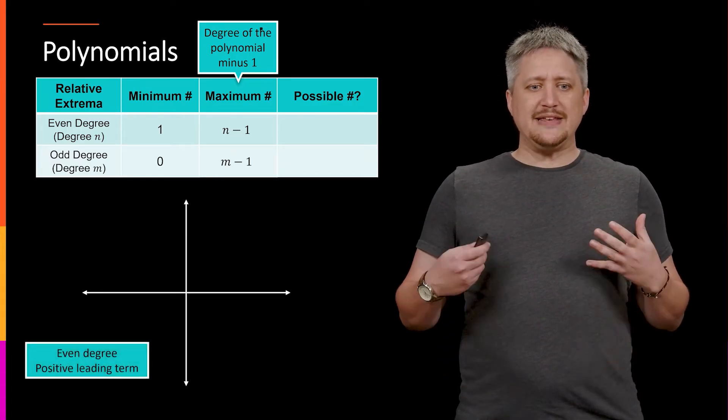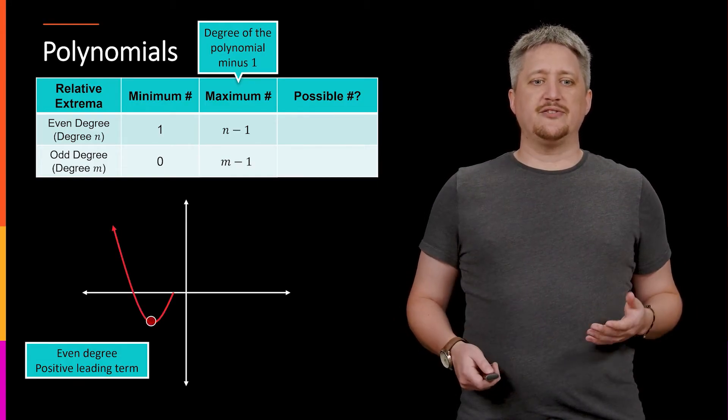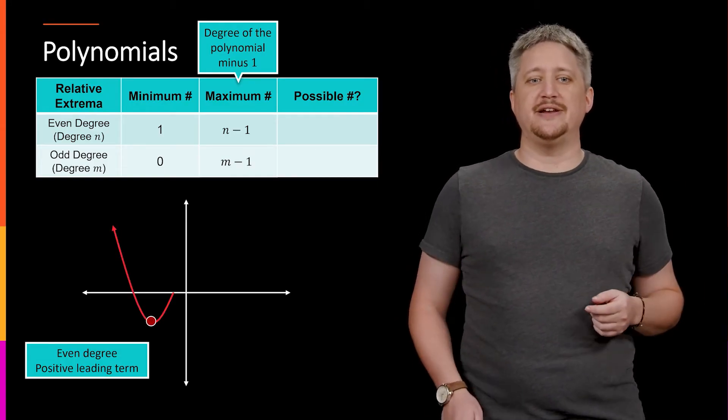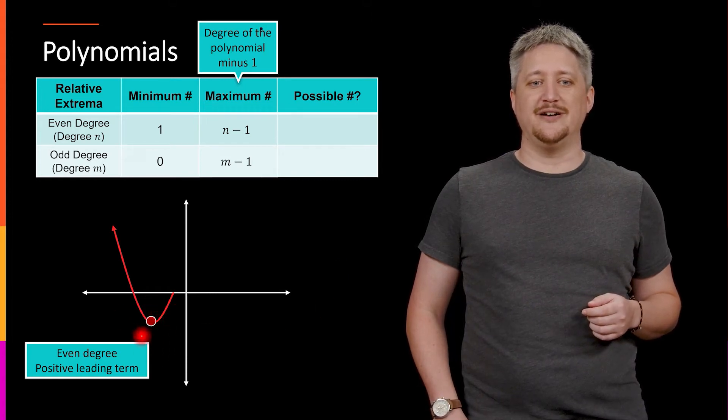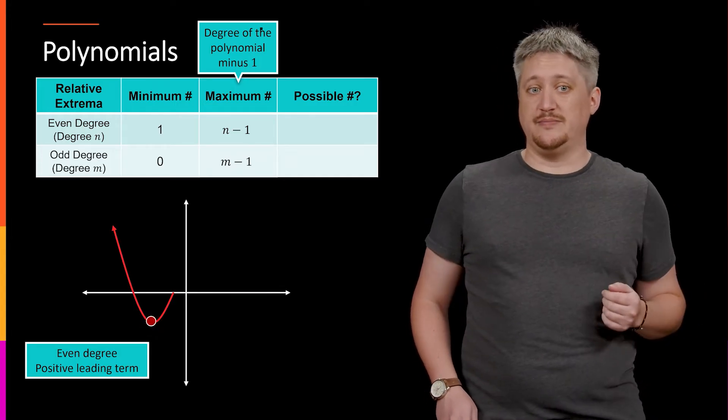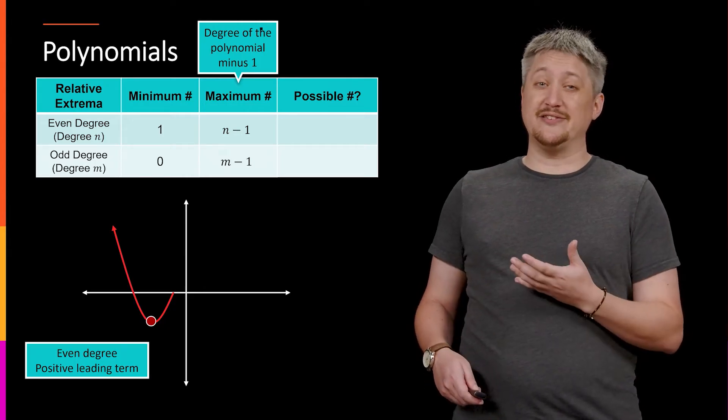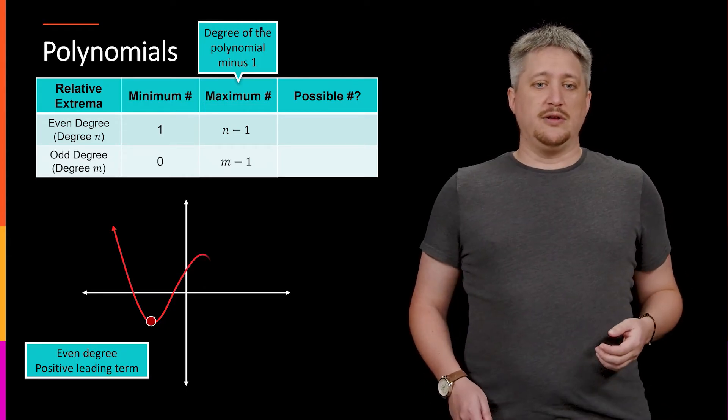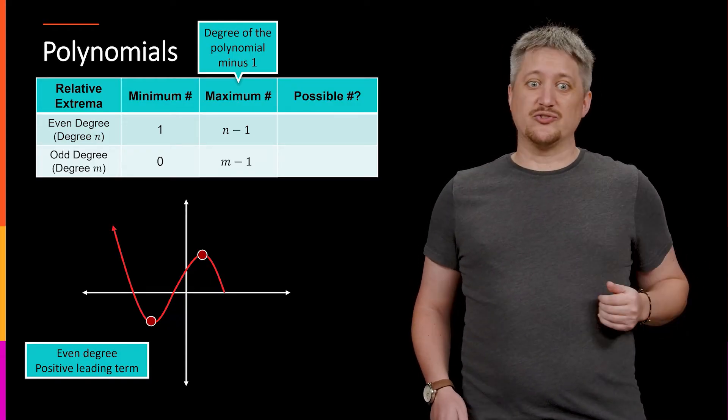Well, even degree, starting there, if we take something that has one, right, as our one possible thing, we have one local minimum here and we want to tack on one more. We have one. Question is, can we have one that is an even degree that has two? Well, I would turn the curve again to get another local extrema,